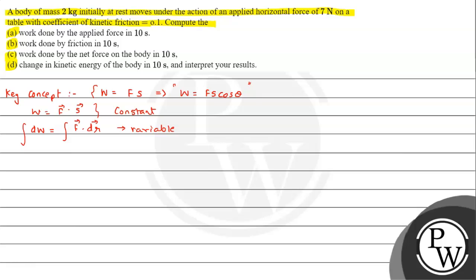The definition — force into displacement in the direction of force — is quite important. Apart from this, we need to understand the basic concept of friction. Friction opposes the relative motion. If this block is moving towards the right with respect to the ground, the ground will impart a force on the block in the backward direction to oppose relative motion. Kinetic friction is defined as fk = μk × N, where N is the normal reaction. Since there is no vertical motion, N = mg.